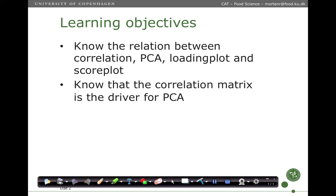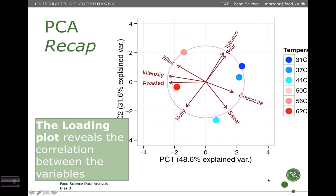Just a short recap. Here we have a PCA biplot where the dots represent different samples and the arrows represent different variables. We see the correlation structure between these variables through the loadings — for instance, sour and tobacco point in the same direction with fairly long arrows, so they are correlated. Nutty is oppositely correlated to tobacco and sour, and bitter is not correlated at all to nutty, tobacco, or sour because the angle is 90 degrees.